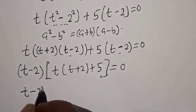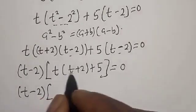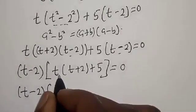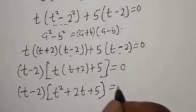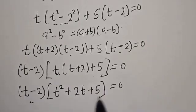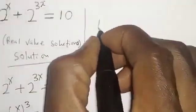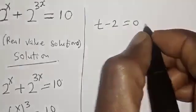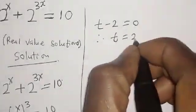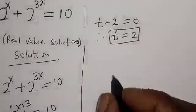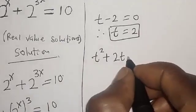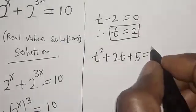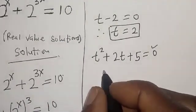Factoring out (t minus 2), we get (t minus 2) multiplied by (t squared plus 2t plus 5) equals 0. There are two cases: t minus 2 equals 0, or t squared plus 2t plus 5 equals 0. The second case is a quadratic equation.